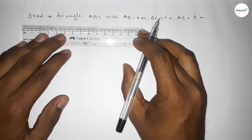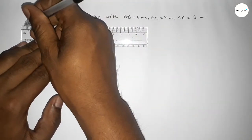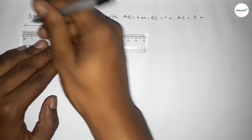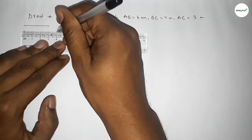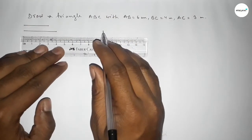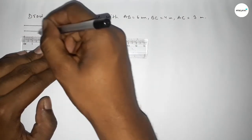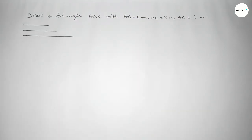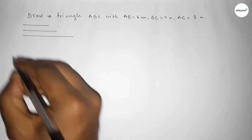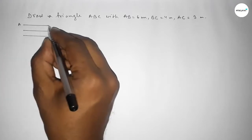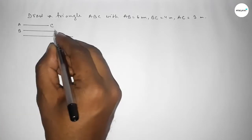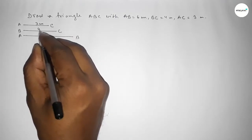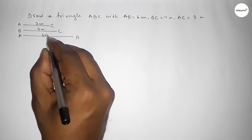First of all, we draw a line of length 3 centimeter — this is AC. Then drawing another line of length 4 centimeter — this is BC. And last, drawing a line of length 6 centimeter — this is AB. So this is 3 centimeter, this is 4 centimeter, and this is 6 centimeter.